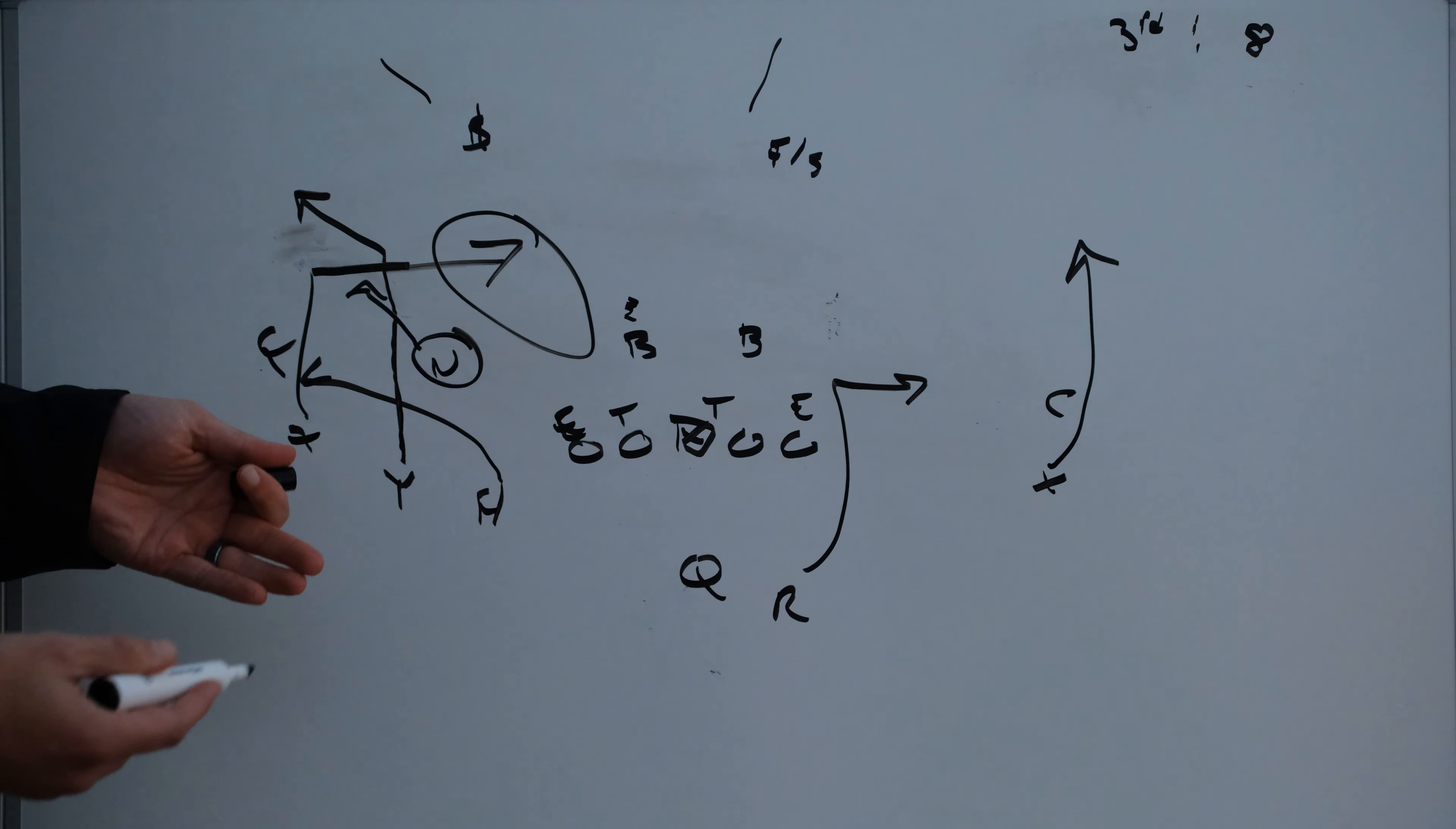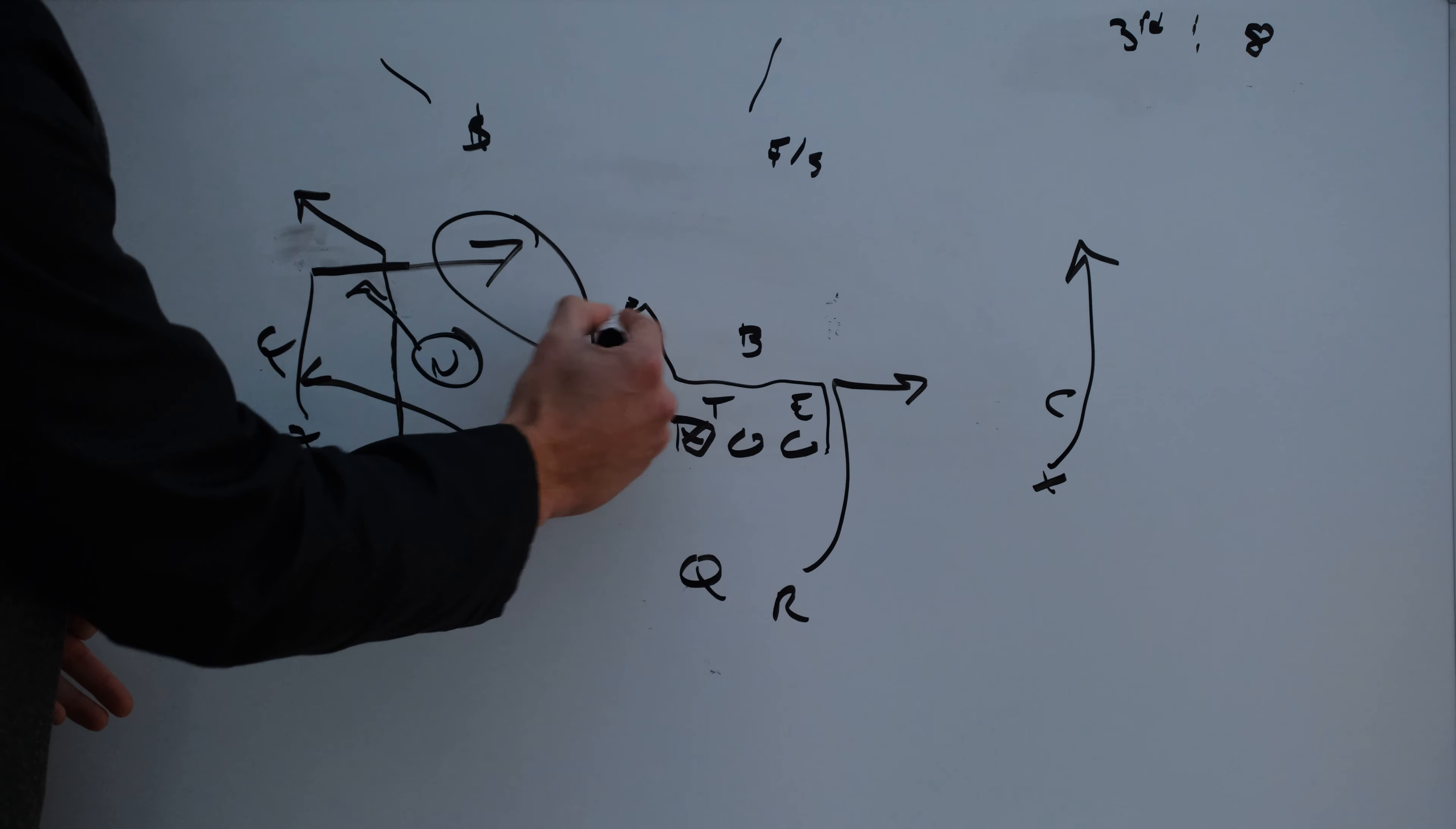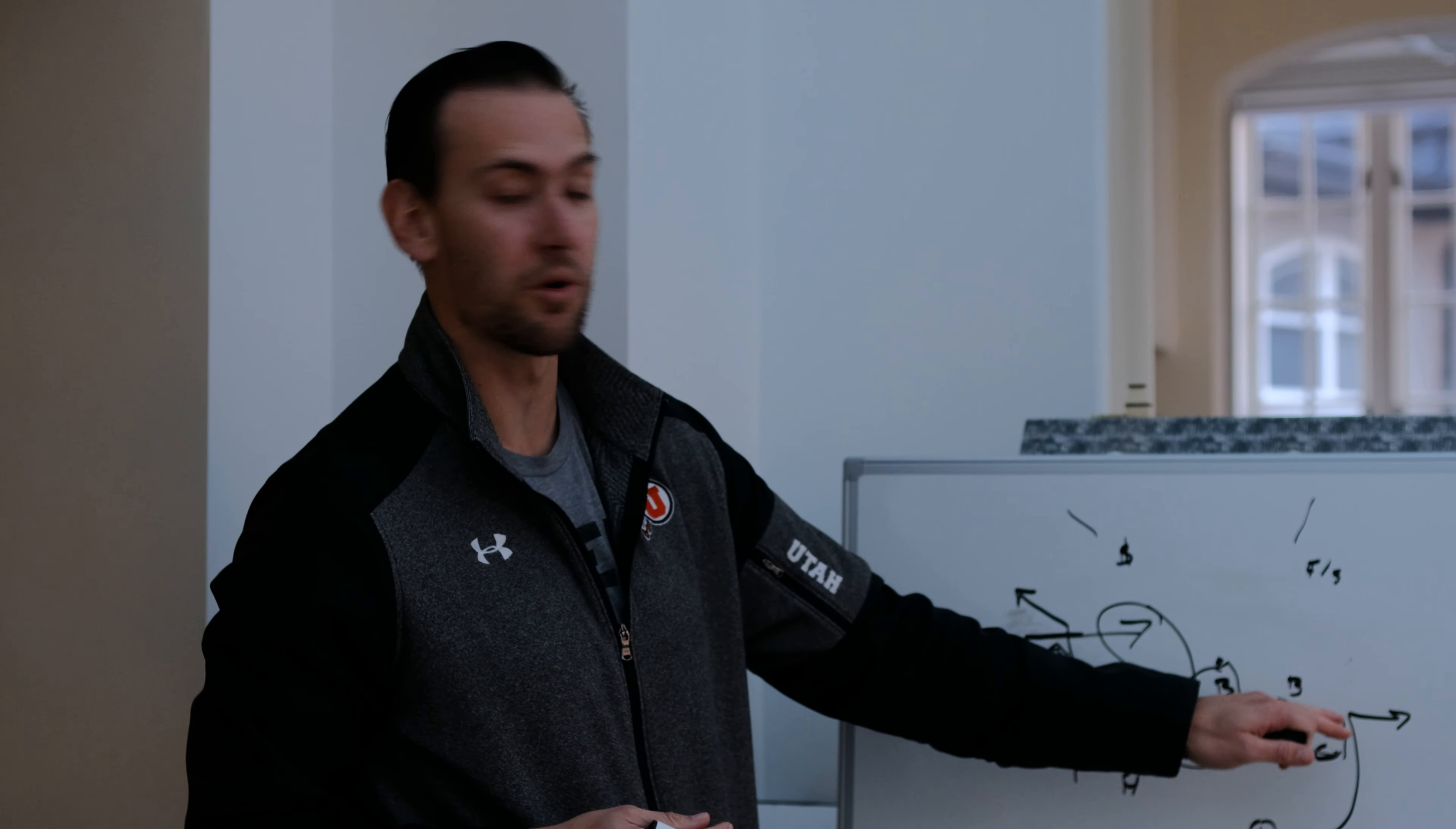The offensive line did a phenomenal job. This is pretty much a true empty protection look with the running back not having any protection responsibilities and free releasing. So the line has these four down to this linebacker here meaning Cam would need to do something whether it's a hot route or change the protection if he felt like this weak side linebacker was blitzing. Again in this particular case that backer did not, he covered the running back one on one.